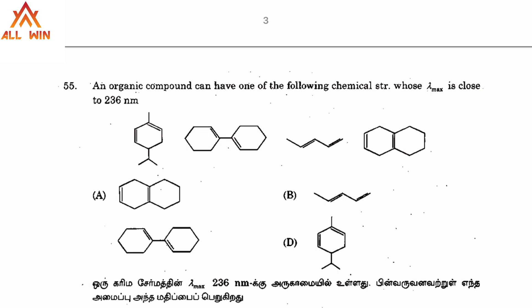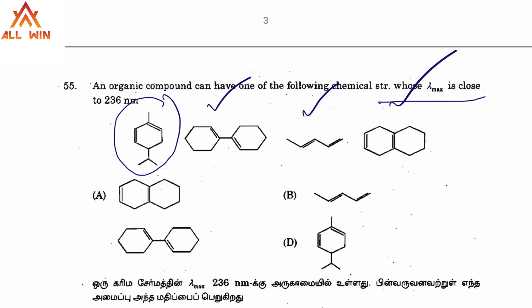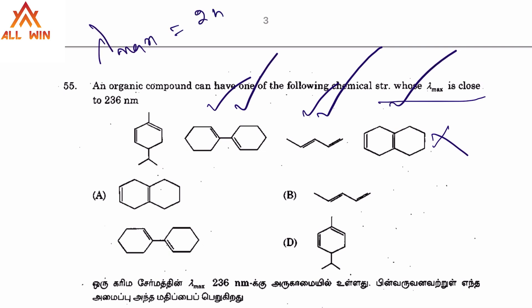An aromatic compound can have one of the following structures whose lambda max is close to 236 nm. We have four structures to consider: a homoannular diene, a heteroannular diene, an acyclic diene, and a non-conjugated system. The homoannular diene has a lambda max around 250–254 nm, so we need to look closer at 236 nm. The answer is likely option C or D.